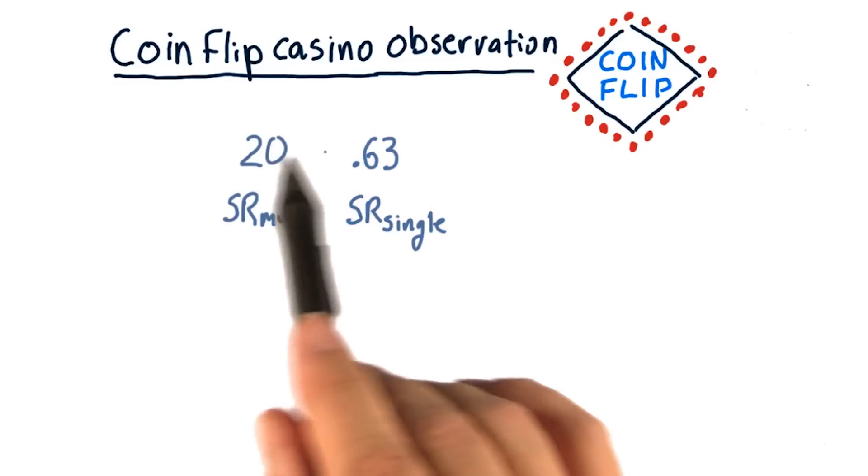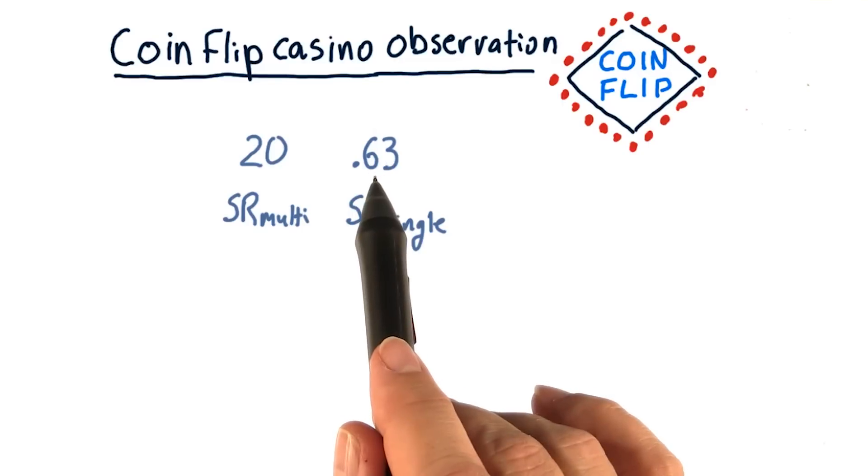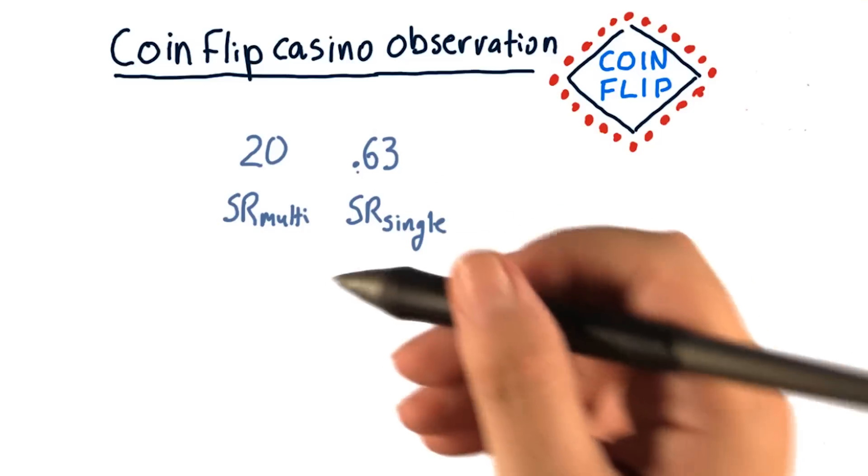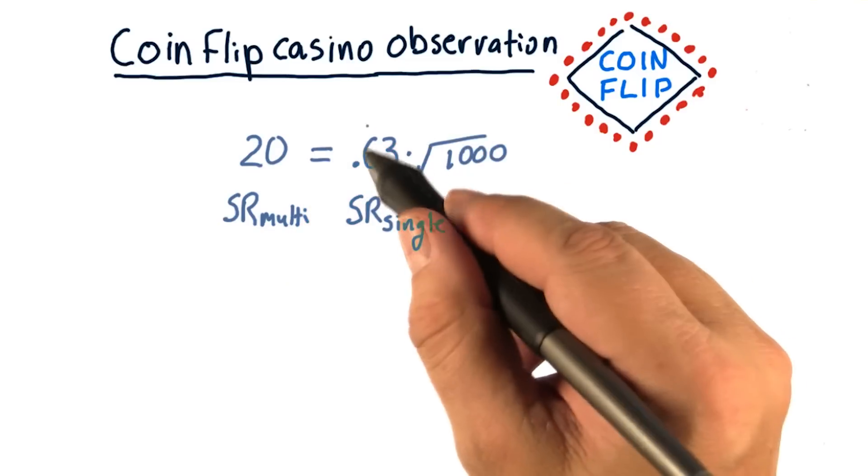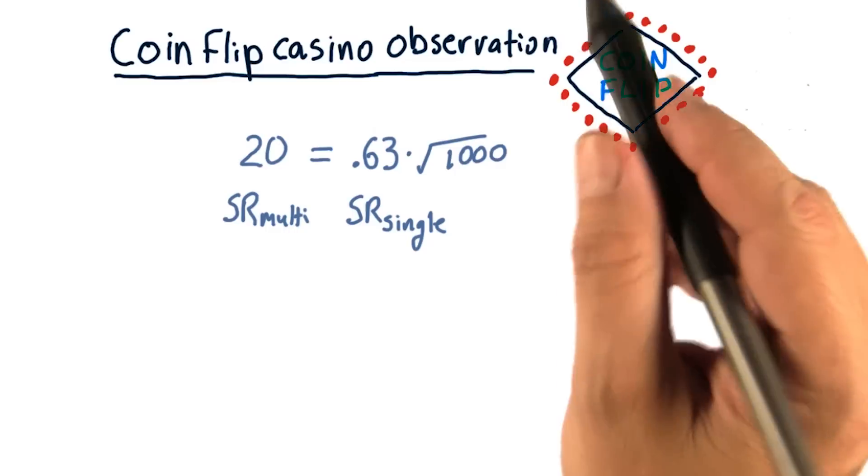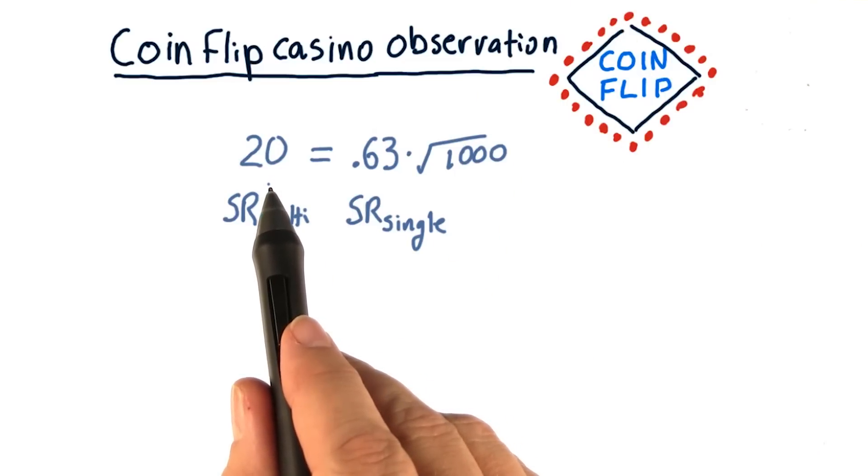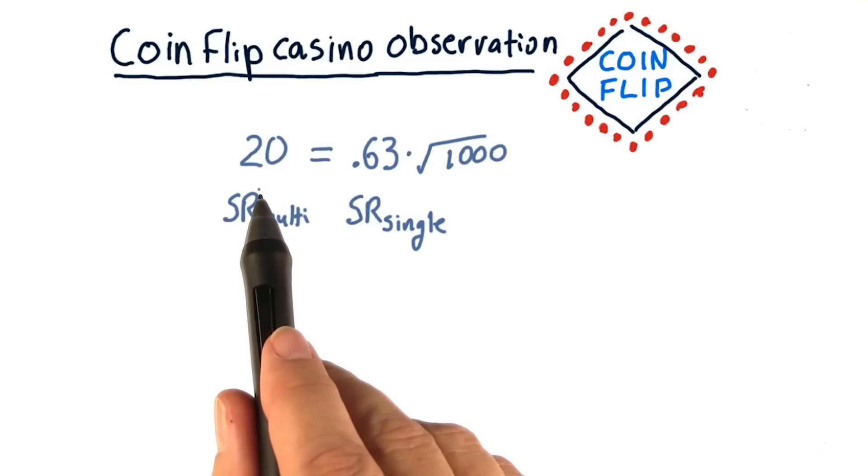So what's the relationship between these two? Of course, 20 is about 40 times bigger than 0.63, but there's something more interesting. It turns out that if we take the single bet case and multiply it by the square root of 1,000, we get the Sharpe ratio of our multi-bet scenario where we bet 1,000 at once.